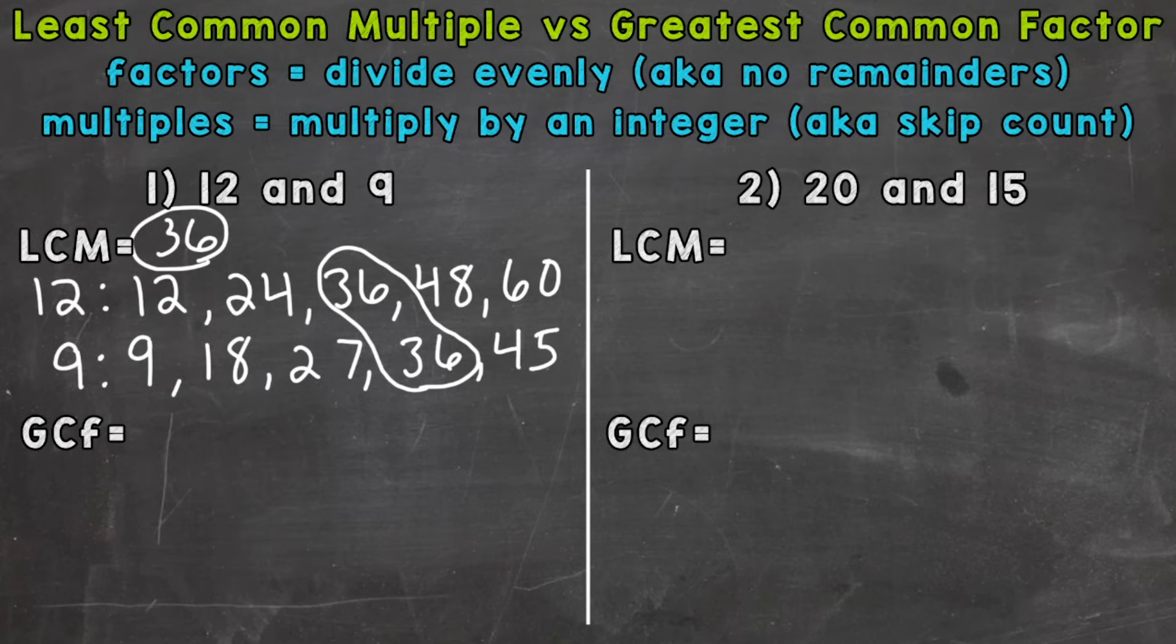I like to think of factors as all the numbers that can go into the given number. That is not the most mathematical or technical way of thinking about it, but it helps me figure out what the factors are when we're taking a look at greatest common factor. Let's start with 12.